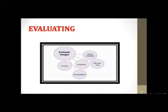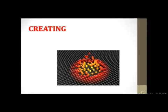Next is creating. That is the next level of taxonomy. It is generating new ideas, products, or ways of viewing things. It can be designing, constructing, planning, producing, or inventing. Can you design this? Can you see a possible solution for this? What would happen if? Can you create new and unusual uses for this? So all these type of questions come under creating.